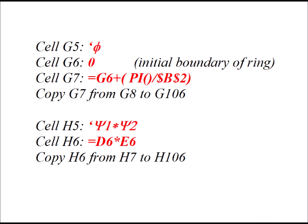In cell H5, we put apostrophe ψ1 star ψ2. In cell H6, we have the formula equals D6 times E6. So it just multiplies the values of the two different eigenfunctions and then puts it in that cell. And then we copy H6 from H7 to H106.